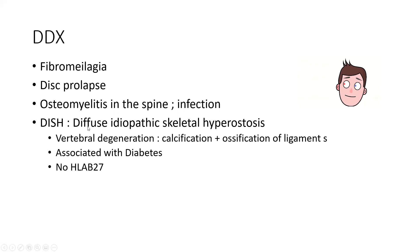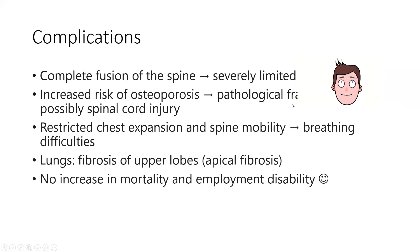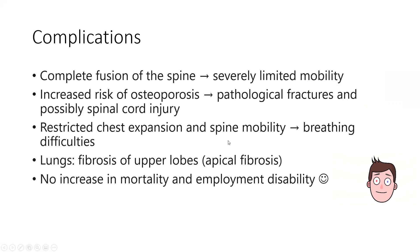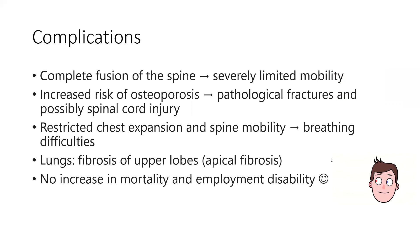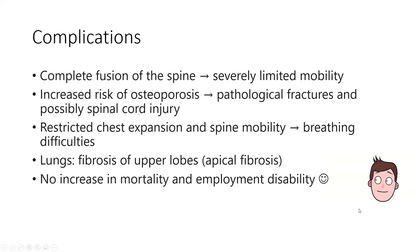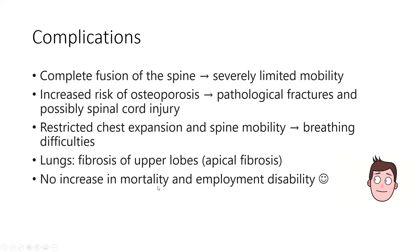Complications of AS include complete fusion of the spine limiting mobility, increased risk of osteoporosis and fractures because constant inflammation degrades bone faster than it can be rebuilt, restriction of chest expansion reducing breathing, and apical lung fibrosis from recurrent infections or inflammation. The good news is that with proper treatment, there's no real increase in mortality or employment disability.